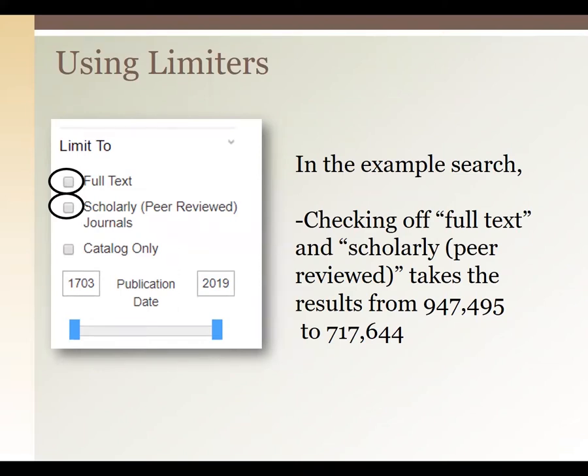You don't have to research each article, each journal, each publisher to find out if it's peer-reviewed — it's right there on the side as a checkbox. There is another way to check if you come at it from a different angle, and I'll show you that a little bit later. By checking those two limiters off, it takes results down from 947,000 to 717,000. Still too much, but we're not done.